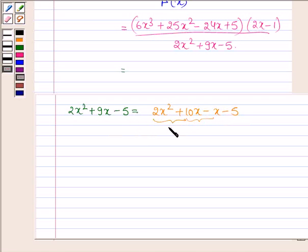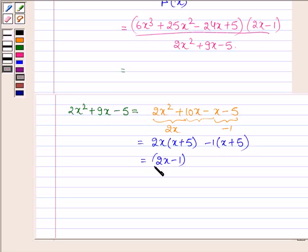Taking 2x common from the first two terms and -1 common from the last two terms, we have 2x(x + 5) - 1(x + 5), and this equals (2x - 1)(x + 5).